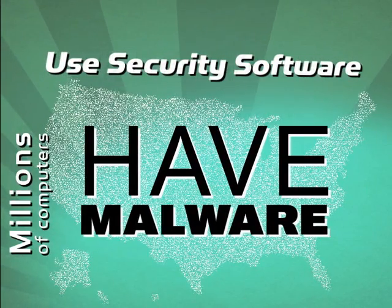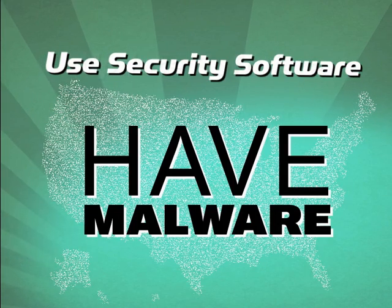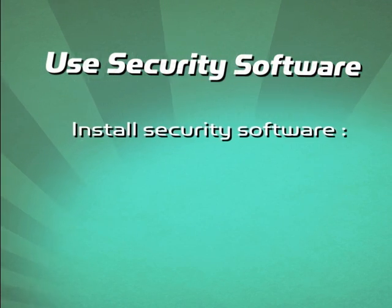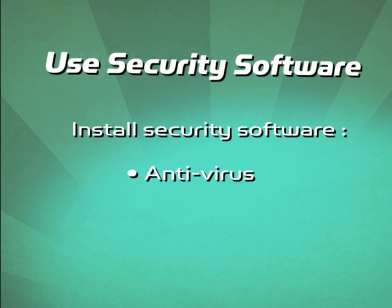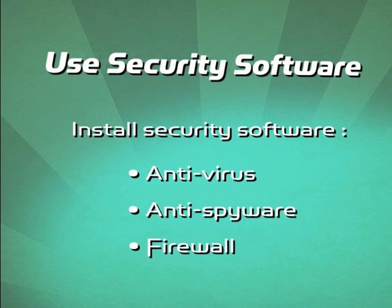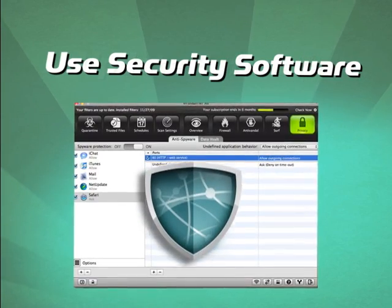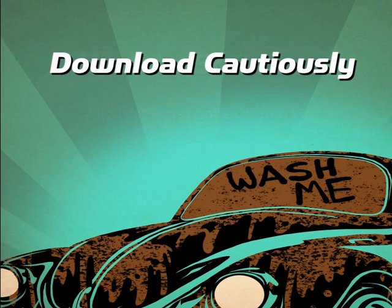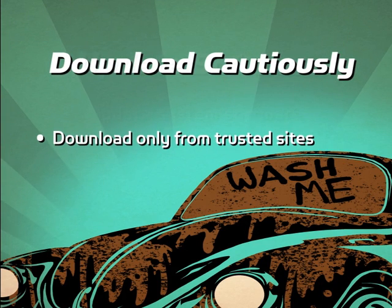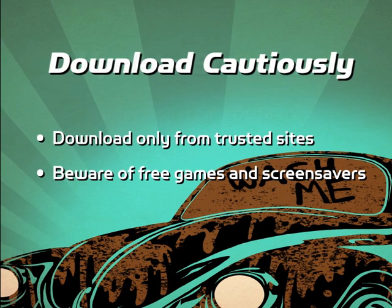Millions of computers in the U.S. are infected with malware. The best thing you can do to protect your computer and your organization is to install security software from a reliable company and keep it up to date. Ideally the security software will be a combination of anti-virus, anti-spyware, and a firewall. Some good examples are Microsoft Security Essentials for Windows and Intego Internet Security for Mac.